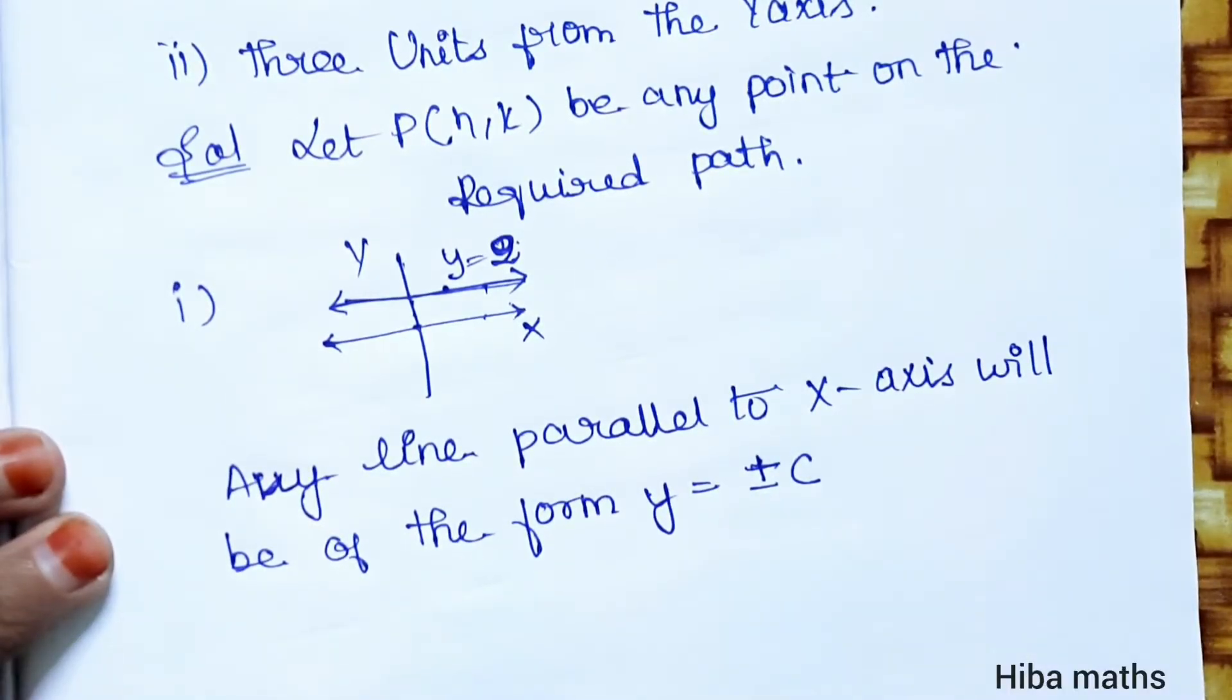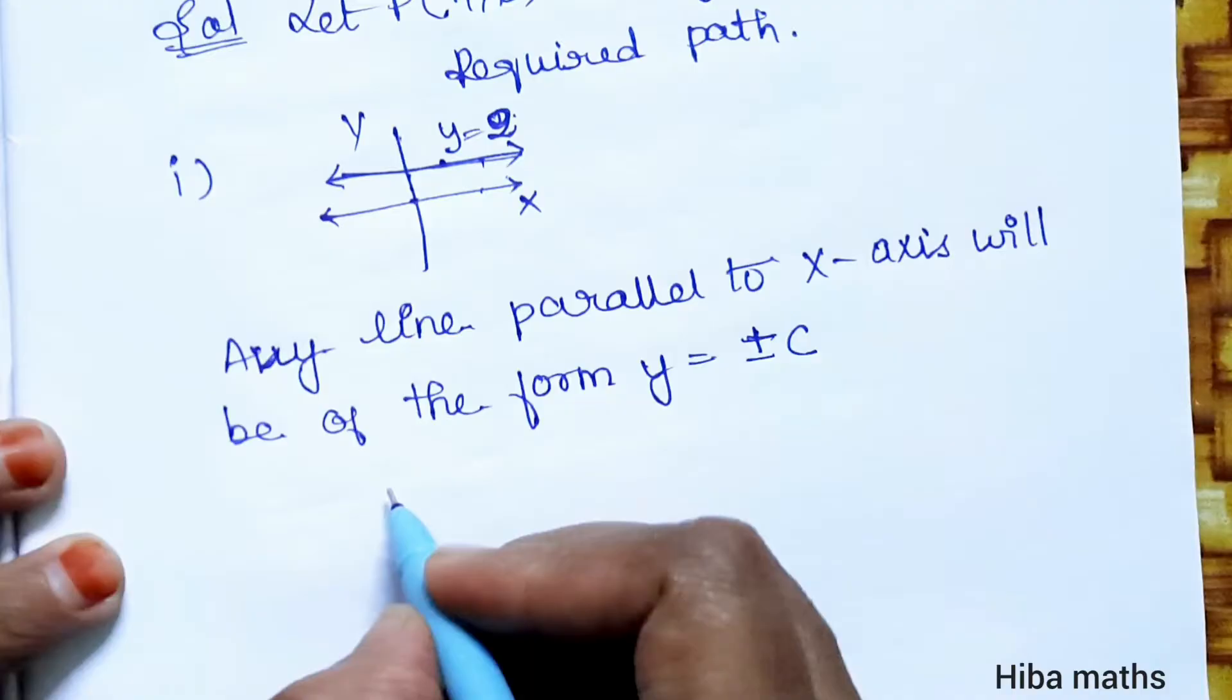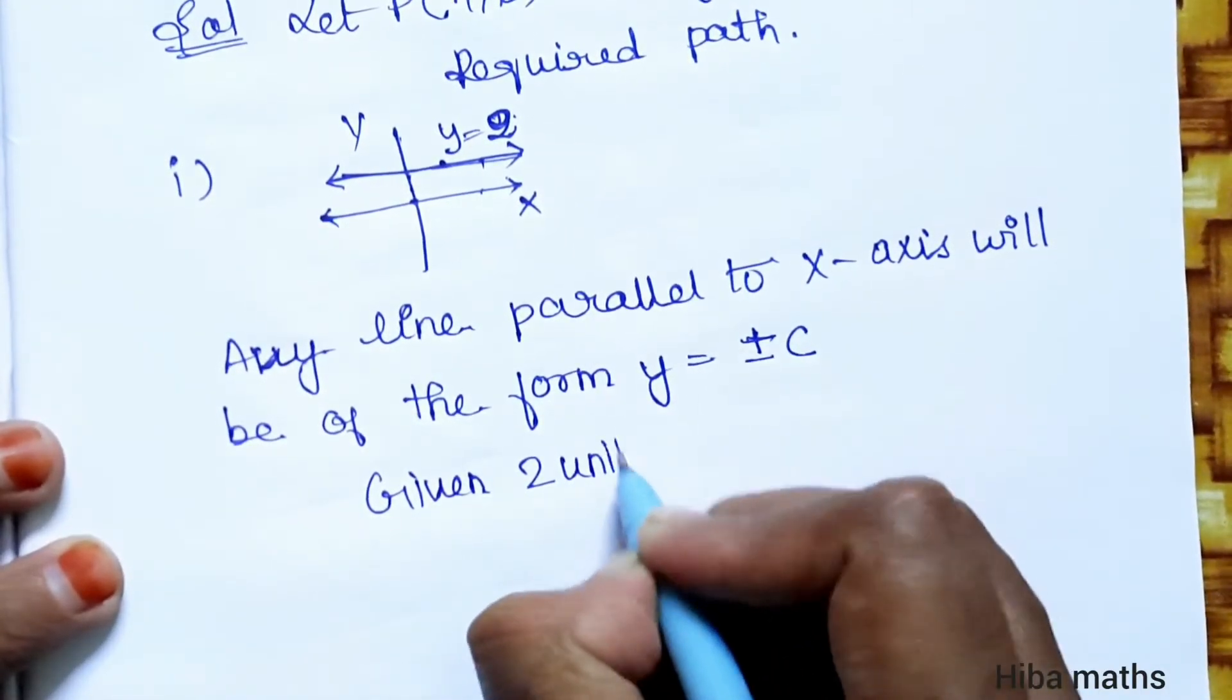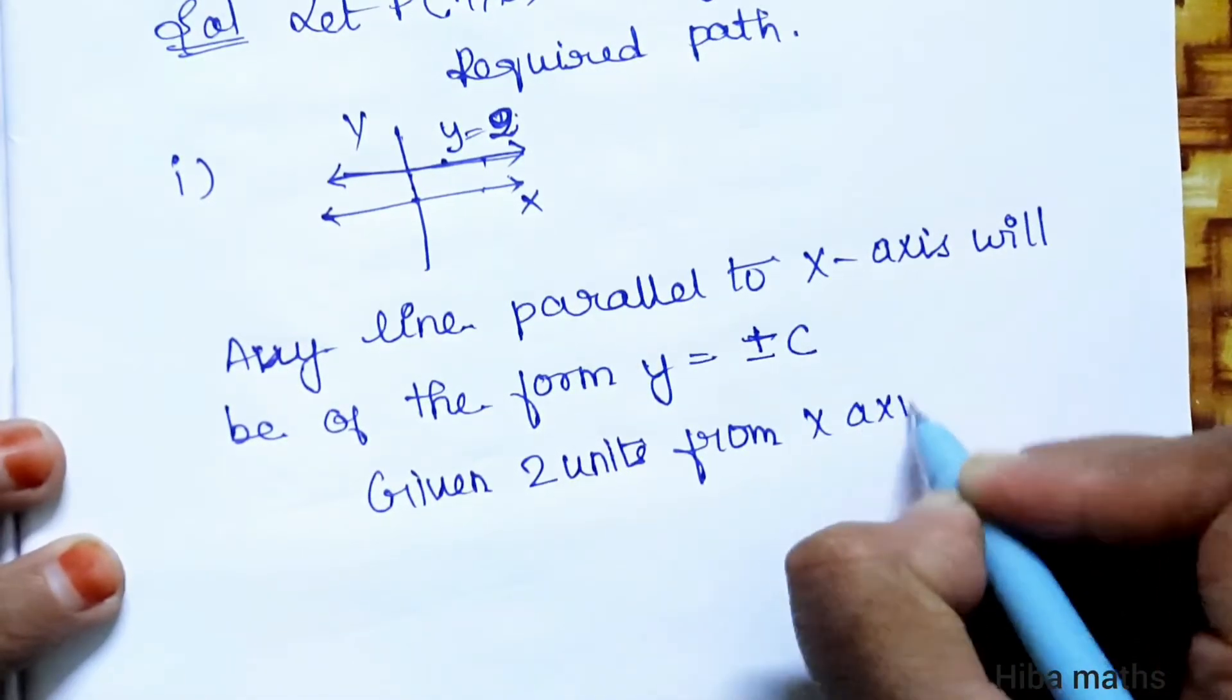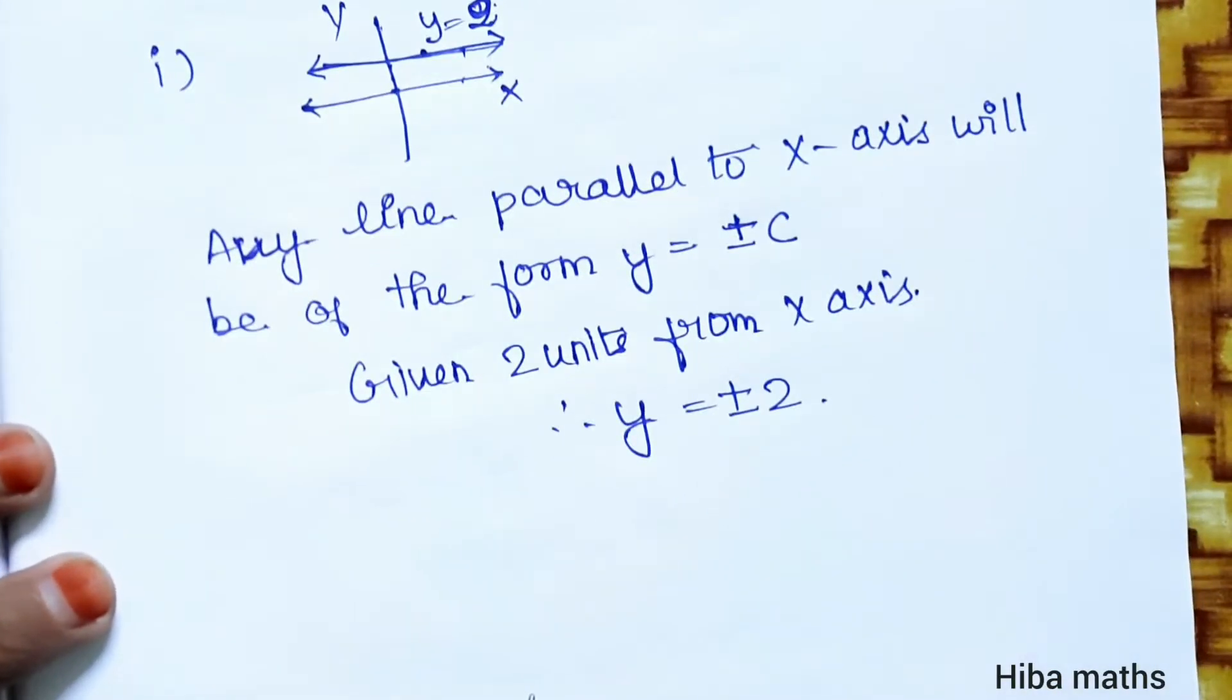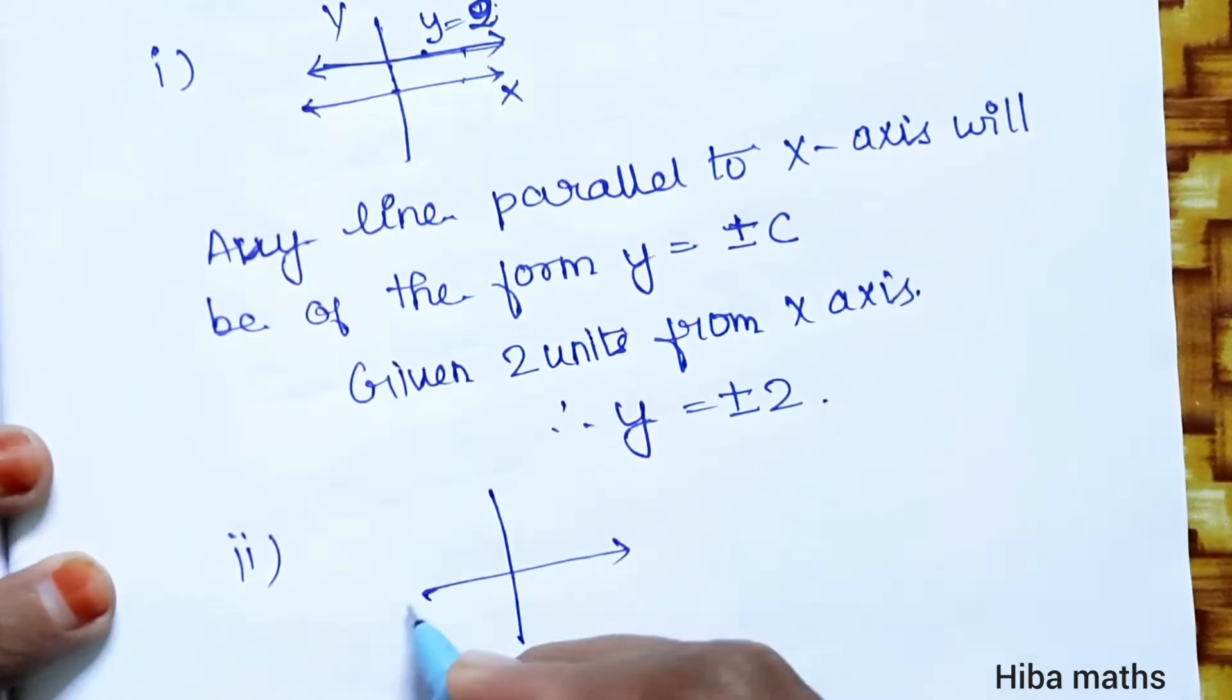Now, what is given in the question? Two units from the x-axis. Therefore, y equals plus or minus 2. This is the answer. The second subdivision is for the y-axis.